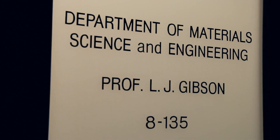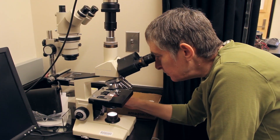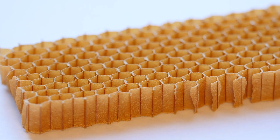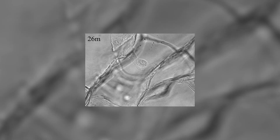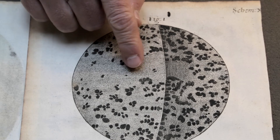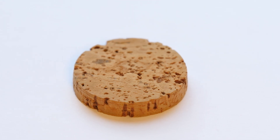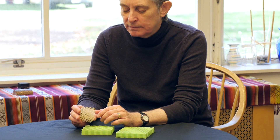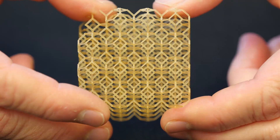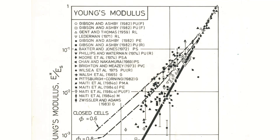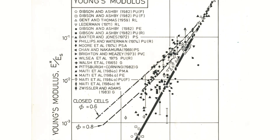I'm Lorna Gibson. I'm a professor of material science and engineering at MIT. I study cellular materials — things like engineering honeycombs and foams, biomedical materials like tissue engineering scaffolds, and plant materials like wood and bamboo and cork. I develop models for the mechanical behavior of these materials and compare the results of the models with experimental test data.